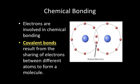When atoms bond they form molecules or compounds. We need to understand how chemical bonding impacts the structure and function of any compound or molecule. Electrons are involved in chemical bonding and can either donate or share depending on the type of bond. Covalent bonds result from the sharing of electrons between different atoms to form a molecule. Two atoms forming a covalent bond share a pair of electrons, which bonds them together. A covalent bond is the sharing of electrons.